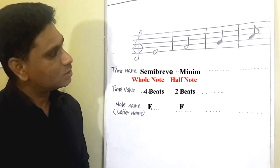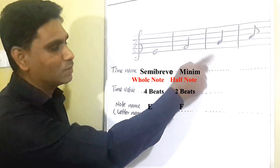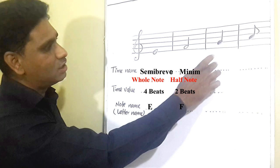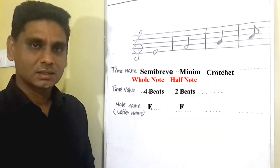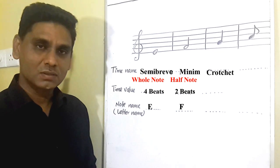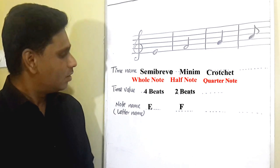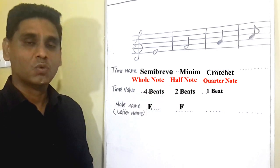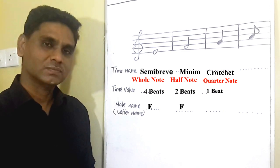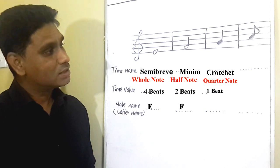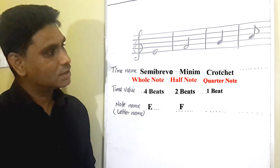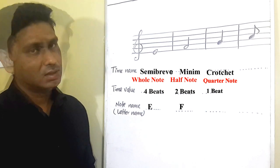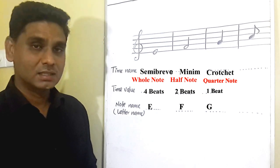Let's go to the third music note. It is also quite similar to the minim note, but it's colored. This note is called Crotchet. The other name of this note is Quarter note. The time value of this note is one beat — this note sounds for one beat. This crotchet note is located at the second line of the stave. The second line is G, so the note name of this crotchet note is G.